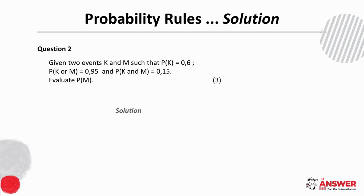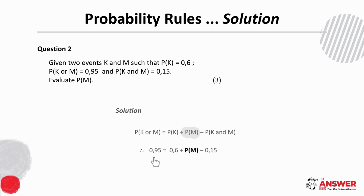Again, for this solution the equation we need is the one we know to be true for any two events. Then we can either first make P(M) the subject and substitute, or we can substitute all the values we were given and then solve for P(M).